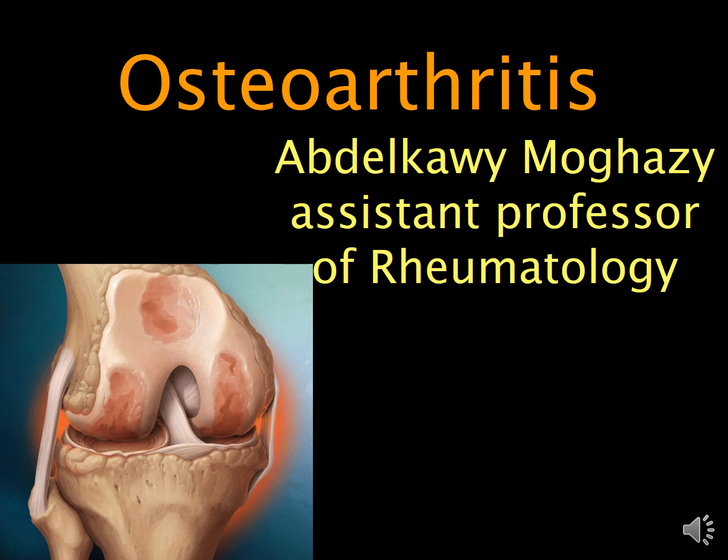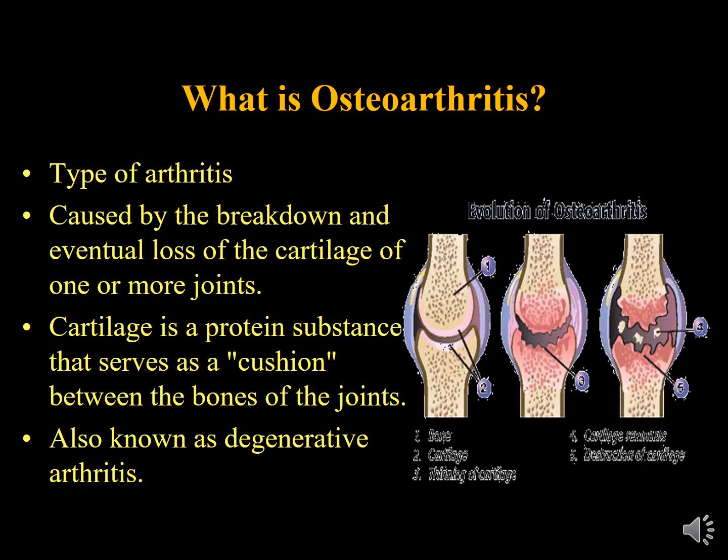Today we'll talk about Osteoarthritis. Osteoarthritis is a chronic disease characterized by destruction and inflammation of the cartilage. It is caused by breakdown and eventual loss of the cartilage of one or more joints. Cartilage is a protein substance that serves as a cushion between the bones of the joints, also known as degenerative arthritis.